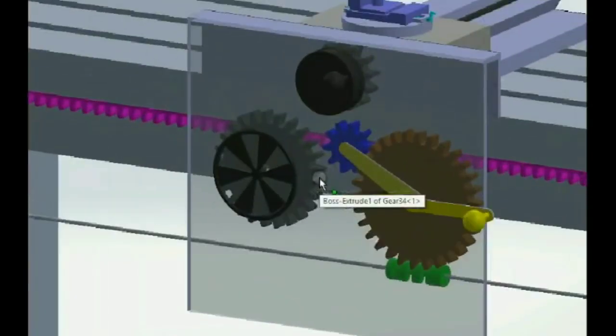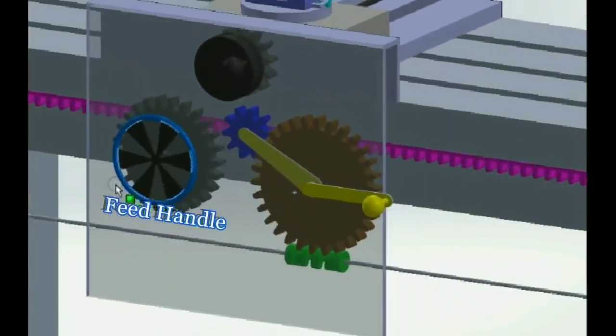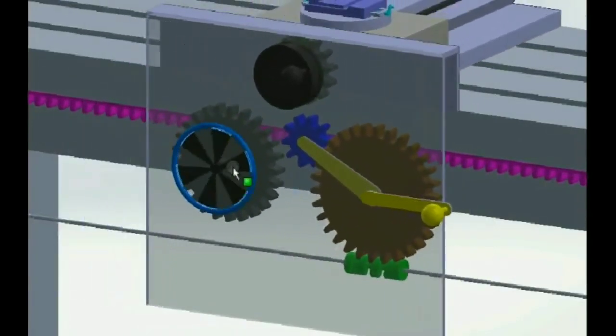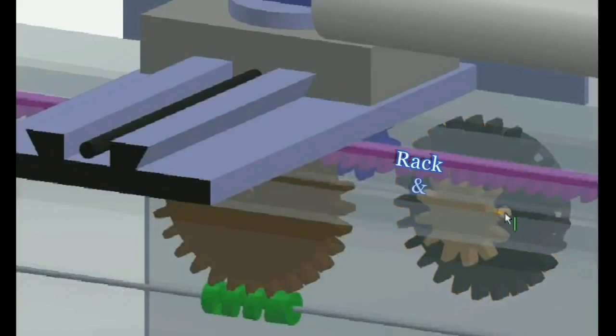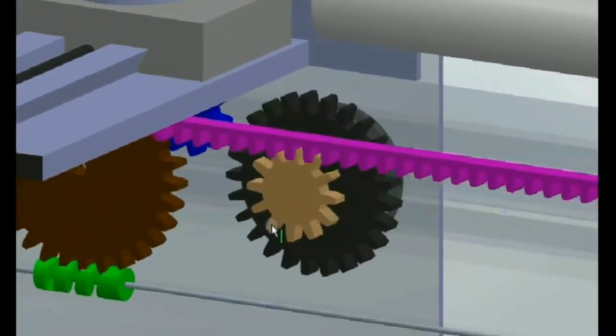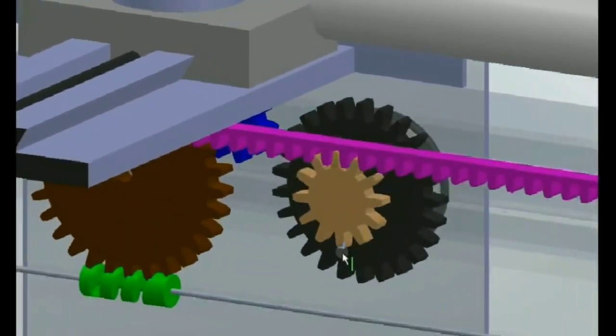Similarly there is a handle for feed motion too. There is a gear behind the handle which mates with a rack on the bed. So there is a rack and pinion joint in which the pinion gear moves with respect to the rack and takes along the whole carriage.